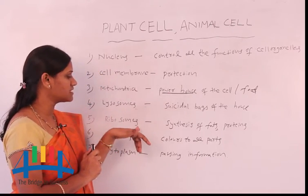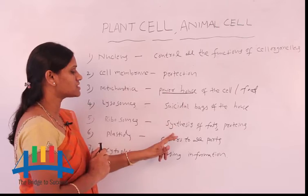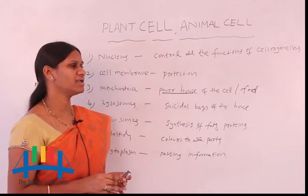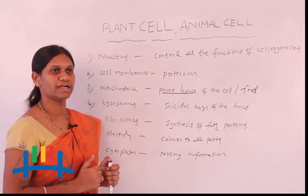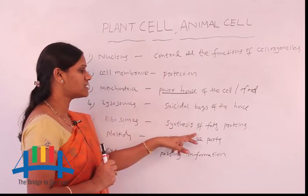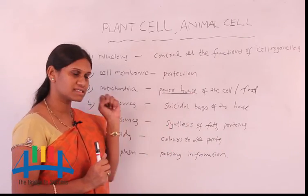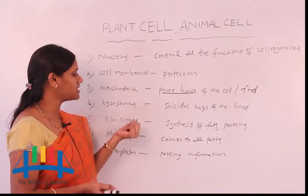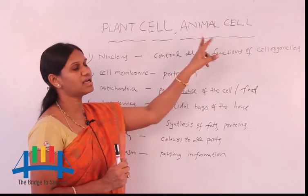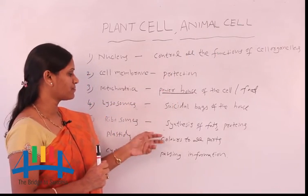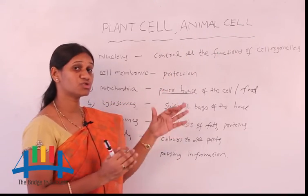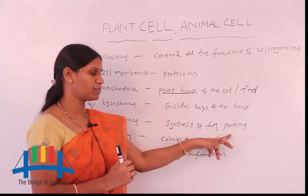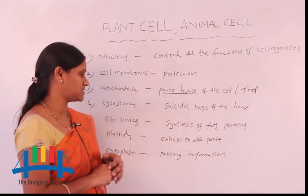The next cell organelle is ribosomes. Ribosomes are very important for the synthesis of fats and proteins. Commonly, we take different types of food items, and from that, fats and proteins are synthesized by ribosomes. Ribosomes are present in both plant cell and animal cell and help in the storage and synthesis of fats and proteins from food substances.